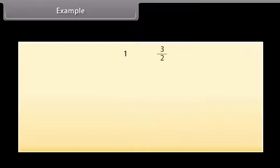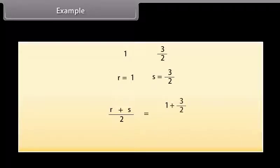Similarly, the rational number between 1 and 3 by 2 is 5 by 4.